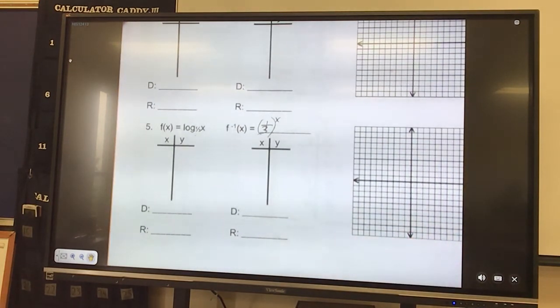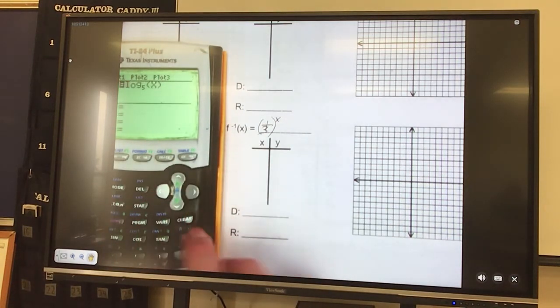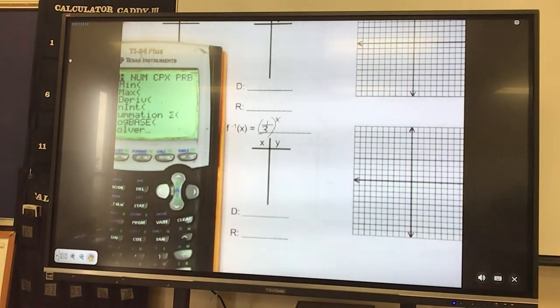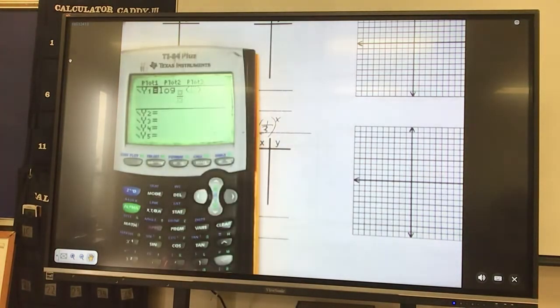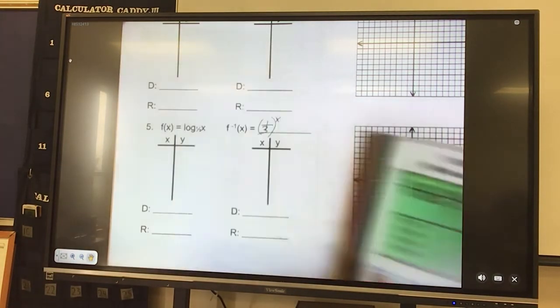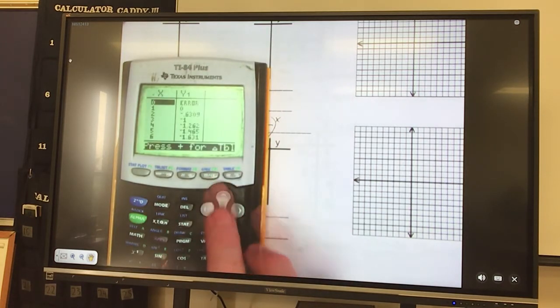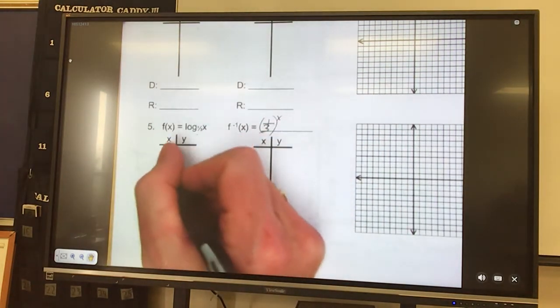All right, let's just jump to number 5. A log base 1 third. So we have clear, math. Log base, now the fraction, alpha y equals, 1 third. It's a base of 1 third to the x. Let's take a look at it. We see our errors, so let's start at 1 again. 1, 2, 3, 4.